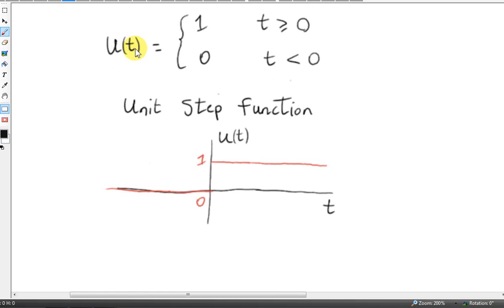So this function, called u of t, is zero for values of t less than zero.